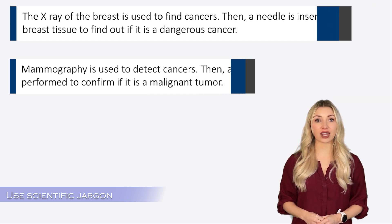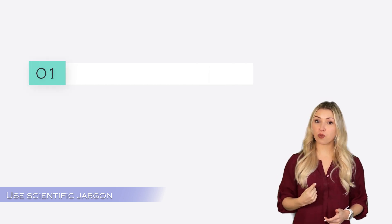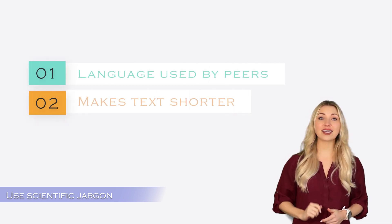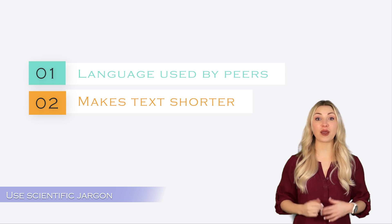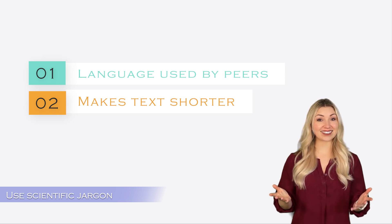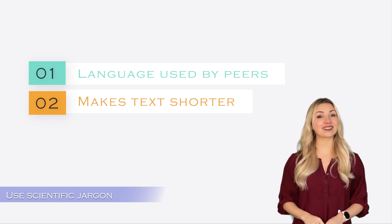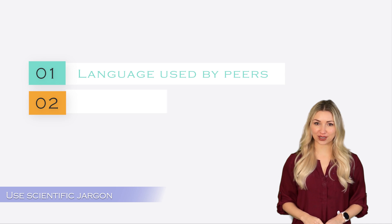Using scientific jargon has two advantages. Number one, you are using the language used by your peers in your field. And number two, it makes your text significantly shorter.